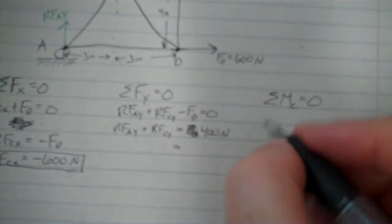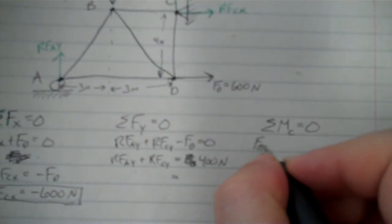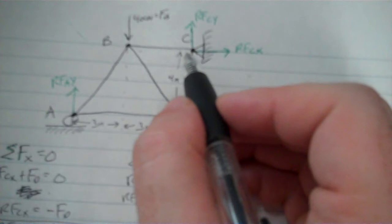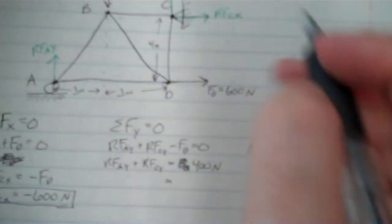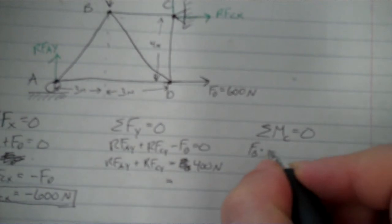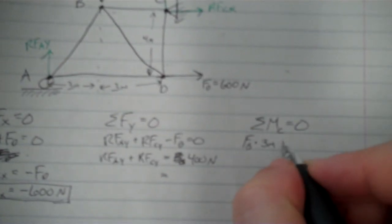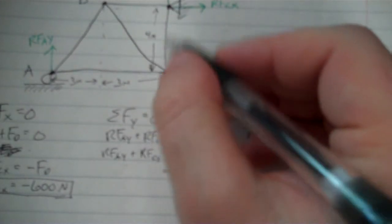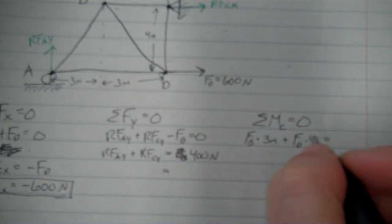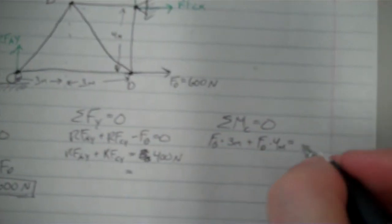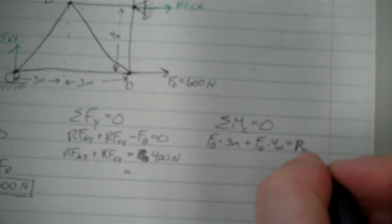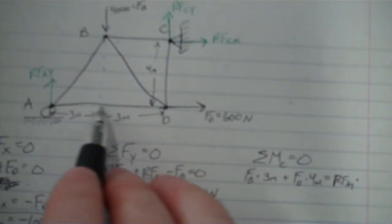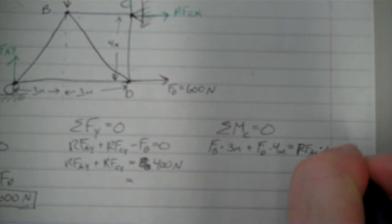All right, so that should tell me RFAY. So I'm going to set this up as FB times the distance. Now I need a horizontal distance, which means from this point to this force, I need that distance right there. And that is 3 meters plus my FD, 600 newtons, times this distance is 4 meters. That has to be set equal to my RFAY because these have to balance, RFAY times, now the perpendicular distance here is the whole thing, this whole 6 meters right here, times 6 meters.